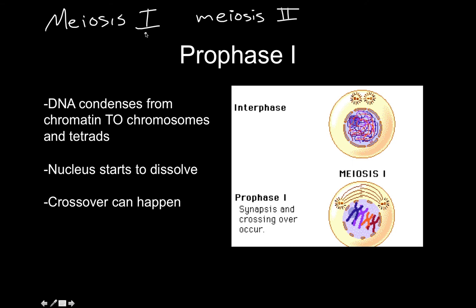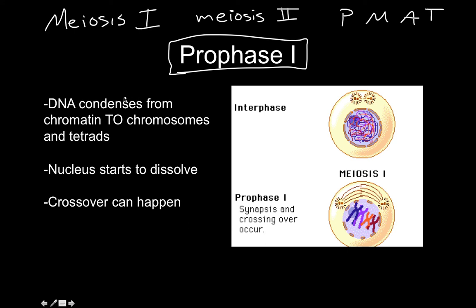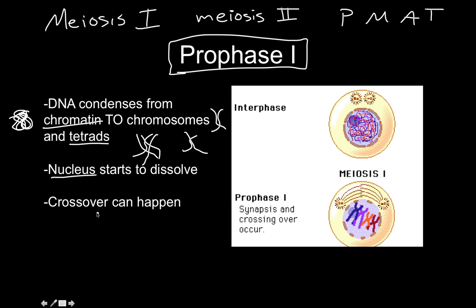In meiosis we have meiosis one and meiosis two, each with their own prophase, metaphase, anaphase, and telophase. The whole thing starts in prophase one. The characteristics of prophase one: the DNA is condensing from that strung-out spaghetti-like chromatin into chromosomes — the X shape — and eventually forming tetrads, which are two homologous chromosomes stacked on top of each other. The nucleus of the cell also starts to dissolve, and crossover can happen.